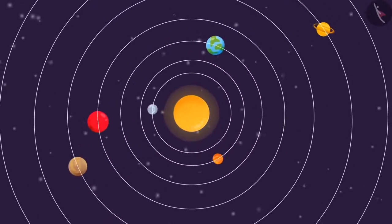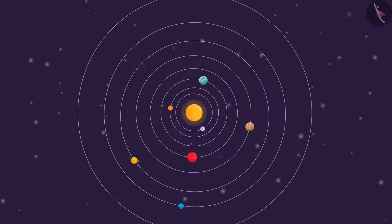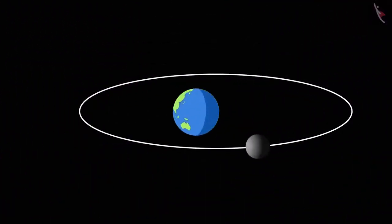In our galaxy, planets revolve around the sun in orbits. We also know that the moon goes around the earth.